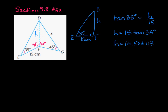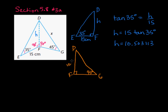Now that we have h ≈ 10.5, we can use that measurement in triangle DFG. Let's draw that triangle. In triangle DFG, angle F is again the right angle and we know this angle is 45 degrees. The side DF is approximately 10.5, and we want to solve for side length x.